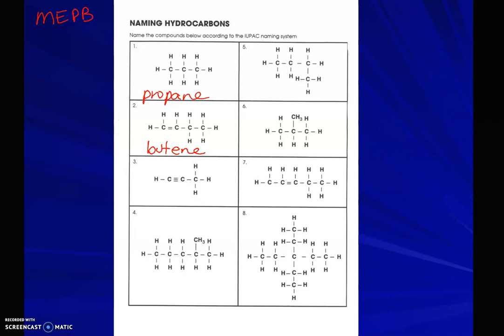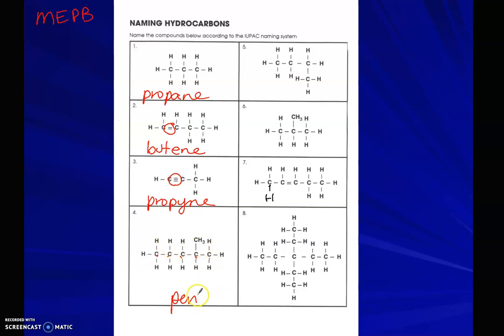One thing I forgot to put on here — this molecule is supposed to have a hydrogen there; it's fixed in your worksheets but not on this parent slide. Number three has three carbons — 'prop-' — and we have a triple bond, so that's '-yne': propyne. Over here we have five carbons — 'pent-' — all single bonds: pentane. And on this carbon we have a methyl group, one carbon coming off of it.